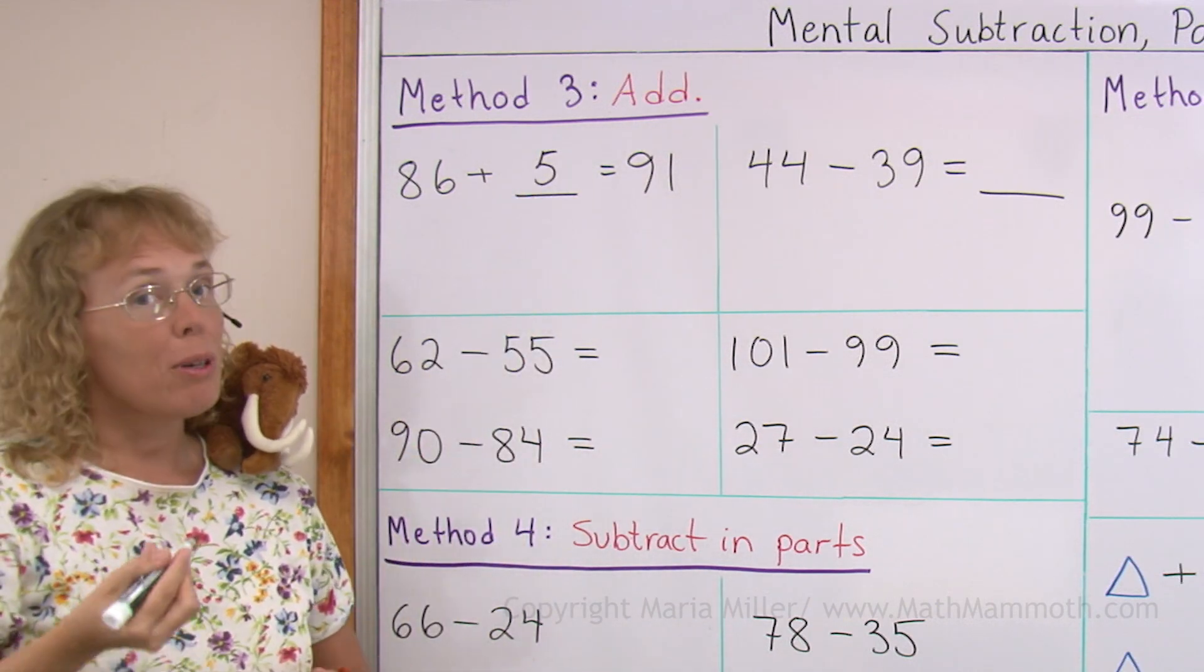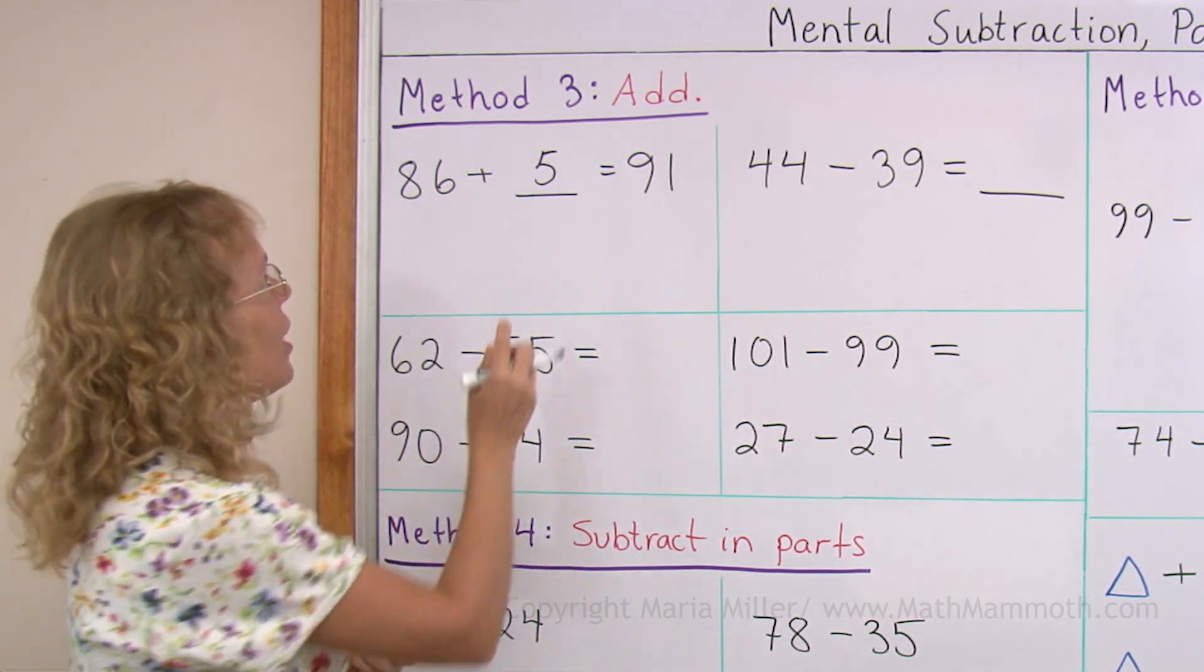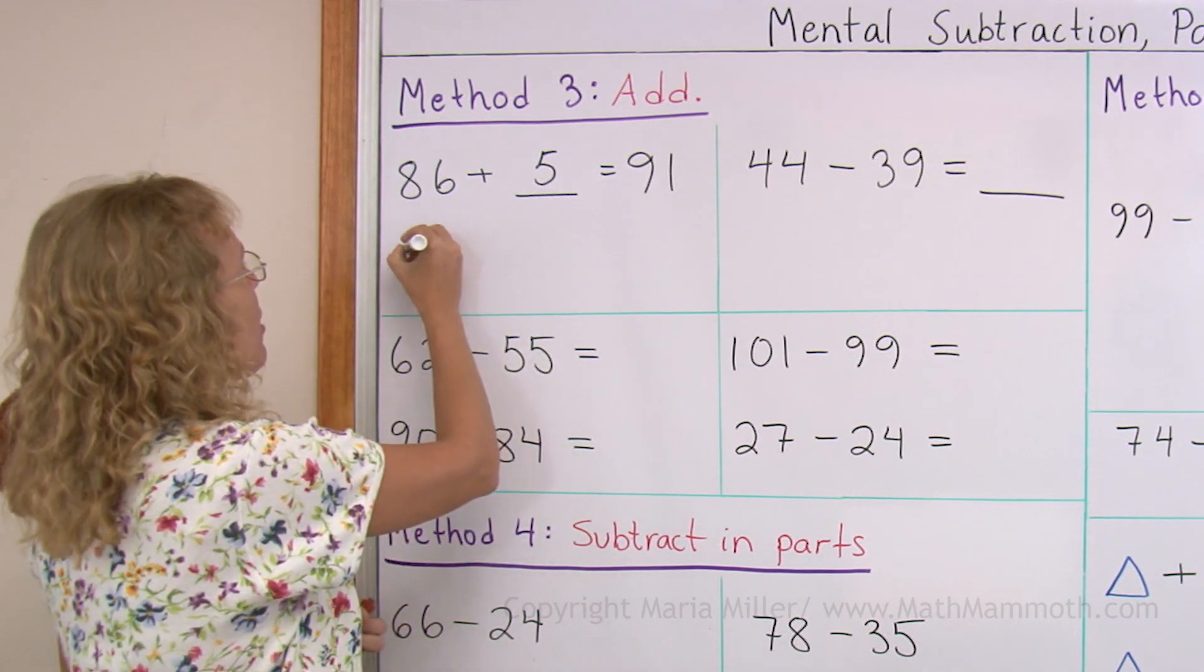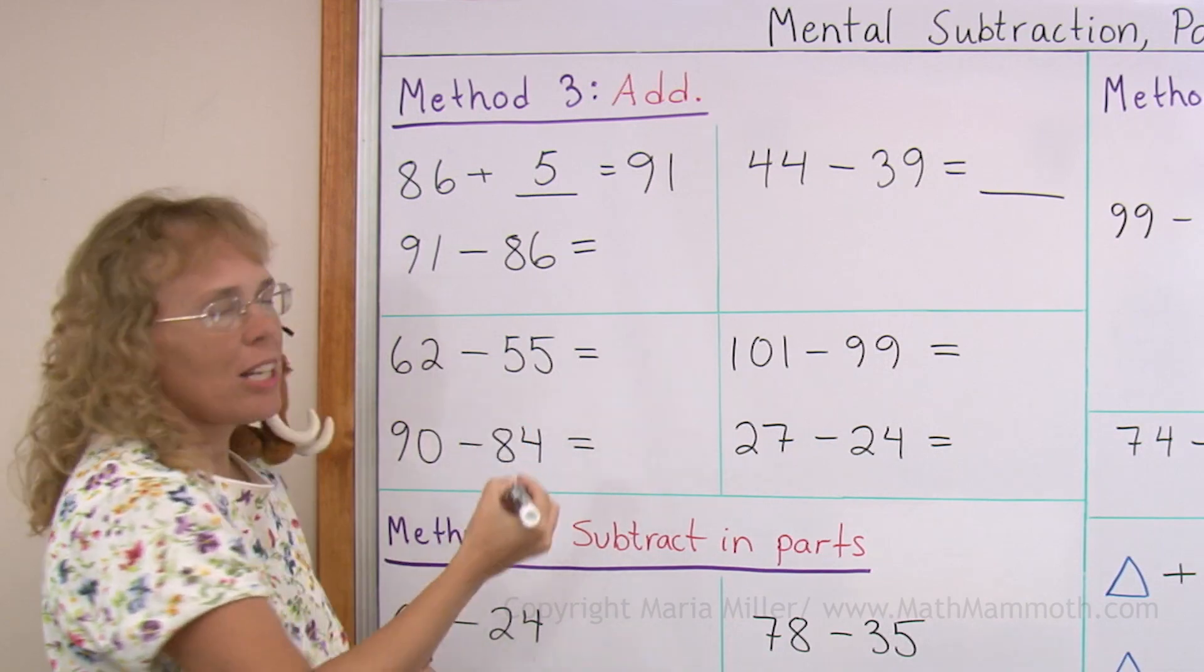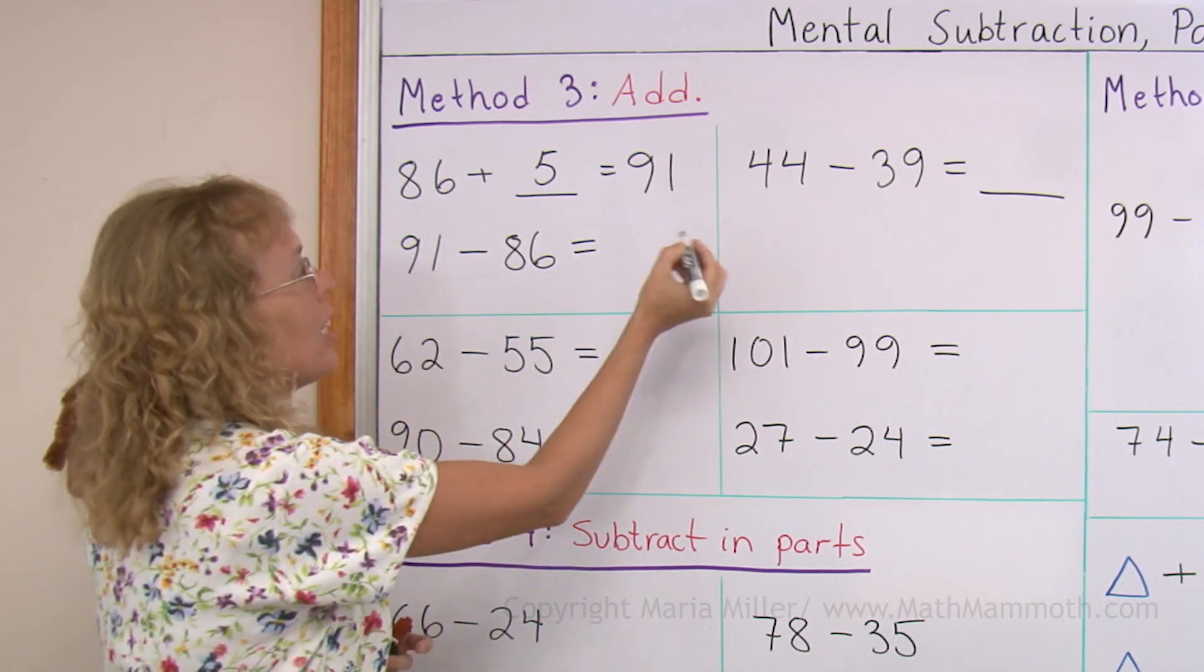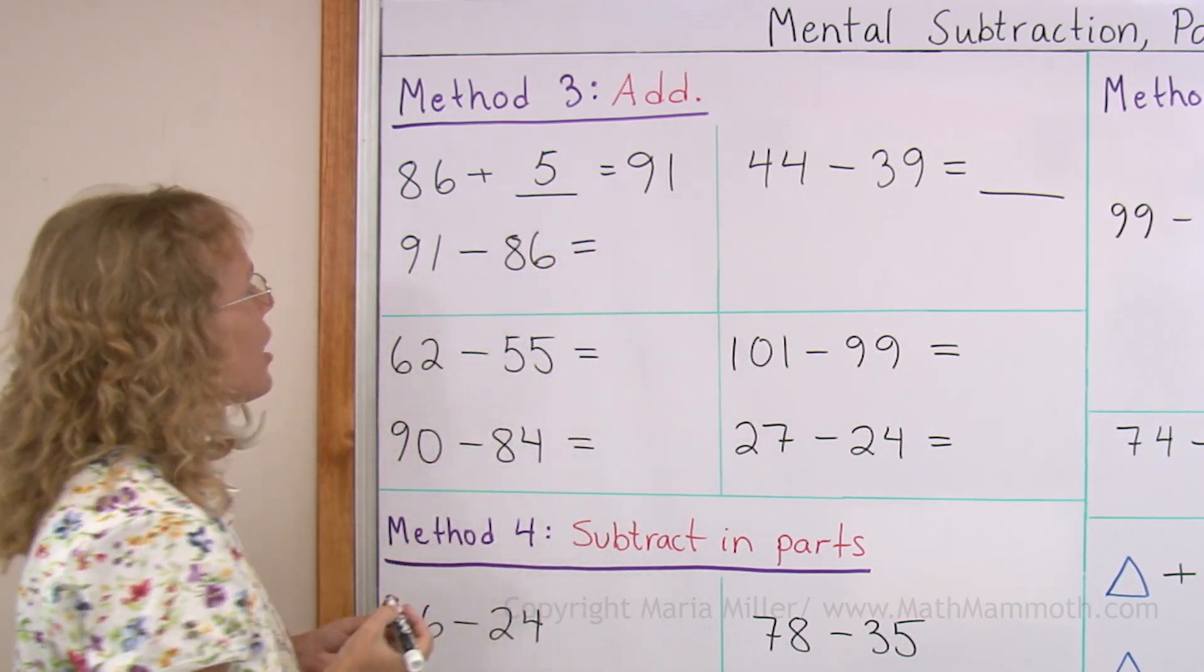But from each addition we can always write a subtraction problem, which in this case would be for example 91 minus 86. That would be a matching subtraction problem for this addition. And the answer is this 5.